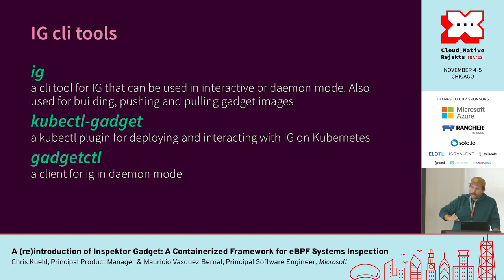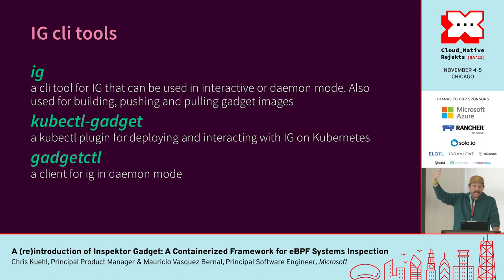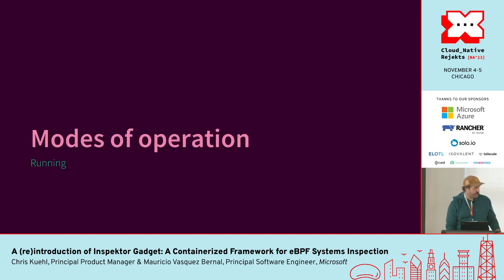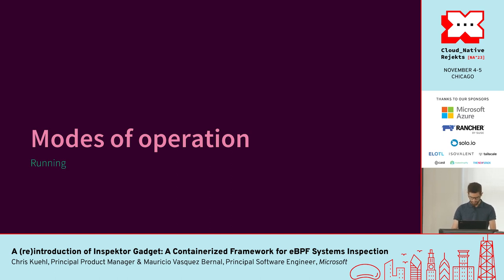Here's a more visual way of looking at it: you have your OCI registry, you push that gadget to the OCI registry — that includes the metadata, the eBPF program, and the user space module. Now I'm going to hand it off for demos to Mauricio. Thank you Chris. So I want to show you how to build a gadget, how to run a gadget, and how to push and pull a gadget image.